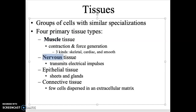Nervous tissue is sending electricity throughout the body, which allows you to have communication. Epithelial tissue is anything on the outside of your body — your skin is epithelial tissue — and it also lines all the cavities within your body and forms the glands, such as your sweat glands on your skin or different endocrine glands within the body.